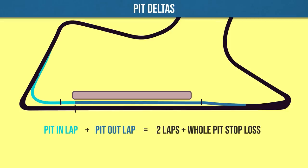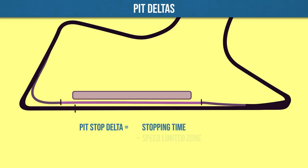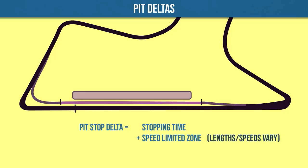Obviously it takes longer to do a pit stop than it does to not take a pit stop because not only do you stop, but your speed is massively restricted through the pit lane compared to cars running at full speed on the track. There is a speed limit in force between the pit lane start and the pit lane end. Each track is different though, with pit lane speed limits that vary, pit lanes of varying lengths and pit exit and entry paths that deviate from the track in many ways. So the pit delta from track to track can vary massively.